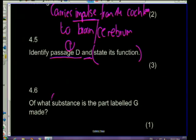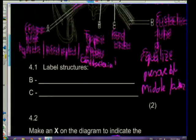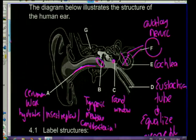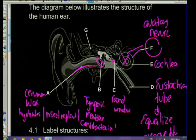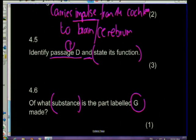Question 4.6: of what substance is the part labelled G made? Remember that part of the ear is embedded in the skull. Part G is made of bone.